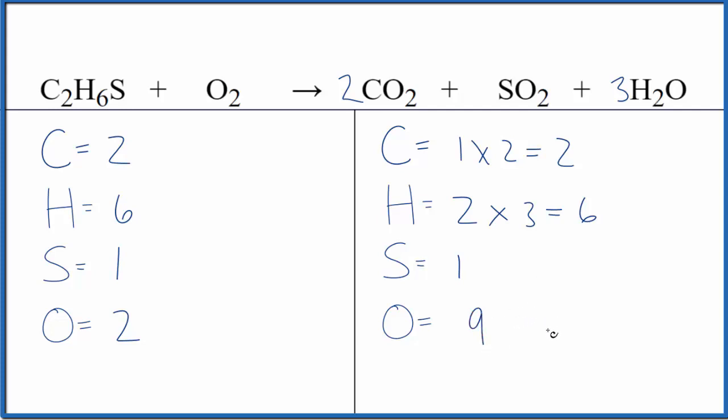At this point, we have a little bit of a problem here. We have this odd number. One way to deal with this is to say two times some number, that's going to equal nine. Two times nine over two, that would equal nine. Two's would cancel out, we'd have nine. So we could say nine over two, and this equation would be balanced. This is the correct ratio for C2H6S plus O2.